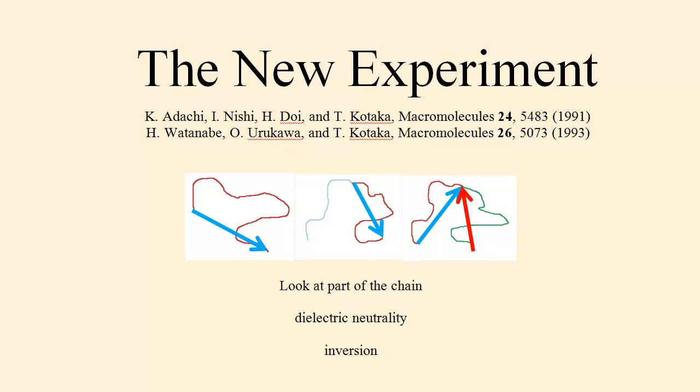The additional experiments proposed in this paper are based on the ingenious experiments of Adachi and Watanabe. Their experiments are indicated by the three figures at the center of the slide. On the left we see the simple dielectric experiment in which the chain has the same composition everywhere, and the sum of the type A dipoles of the chain points from one end of the chain to the other. The dielectric relaxation then determines the time correlation function of the indicated blue arrow, the end-to-end vector, giving us, for example, end-over-end rotation times and mean square distances between the ends of the chain.